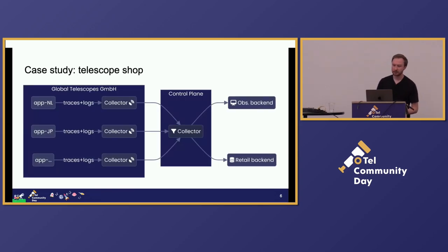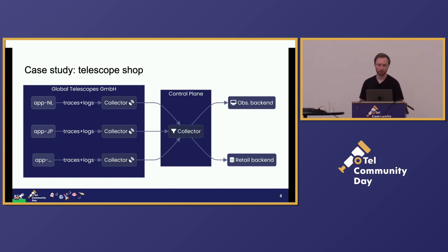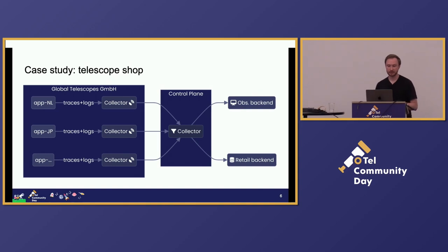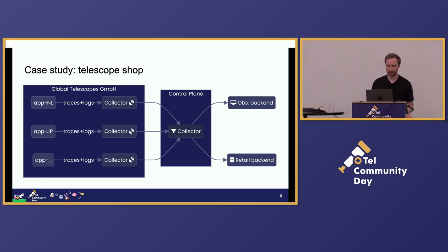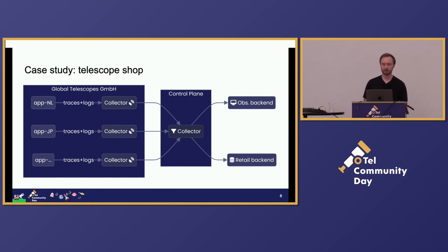Moving into the case study, let's consider a company, Global Telescopes, that is a telescope manufacturing and sales conglomerate that sells to organizations worldwide. And to serve its customers where they are, it has applications that are hosted in regions around the world. But this comes with some complexity. To deal with local data privacy laws and scale their telemetry processing, the applications send their data to sidecar collectors that filter out extra data and redact it before it leaves the region. After it leaves the region, the data is then collected into a centralized collector where they can take actions that need to be handled company-wide or otherwise require a single collector instance.